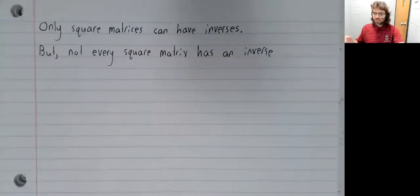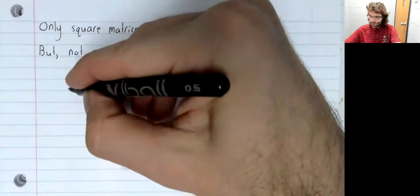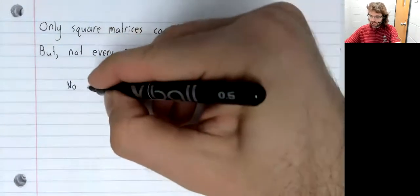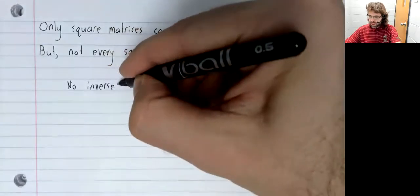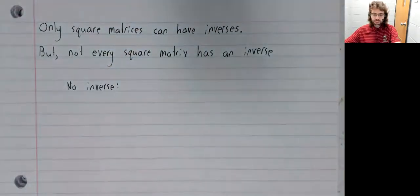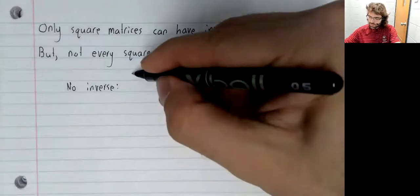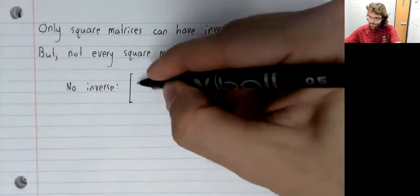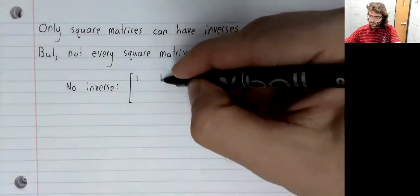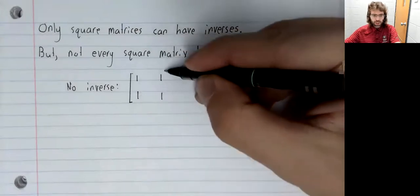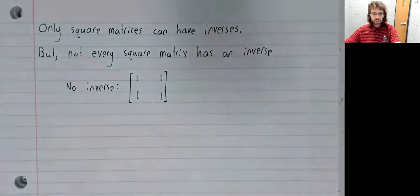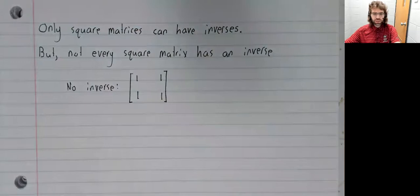Let's give an example of a square matrix with no inverse: 1, 1, 1, 1. This matrix has no inverse.